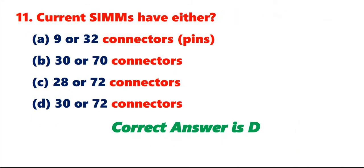Question 11: Current SIMMs have either A. 9 or 32 connectors (pins). B. 30 or 70 connectors. C. 28 or 72 connectors. D. 30 or 72 connectors. Correct answer is D.